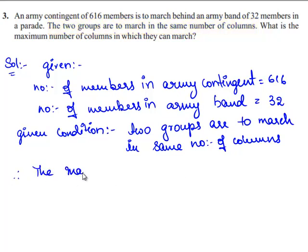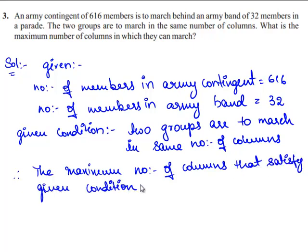the maximum number of columns that satisfy the given condition can be obtained by finding the highest common factor, that is the HCF of 616 and 32.